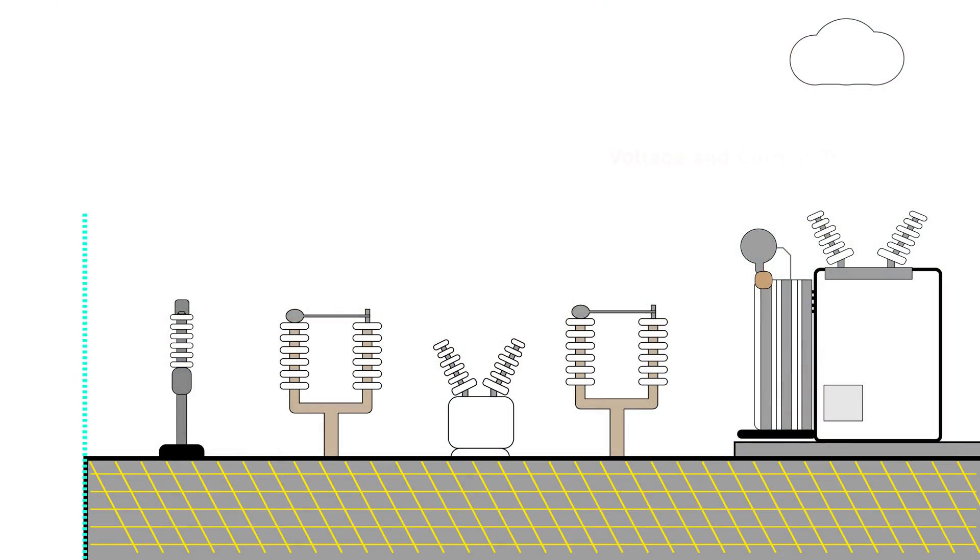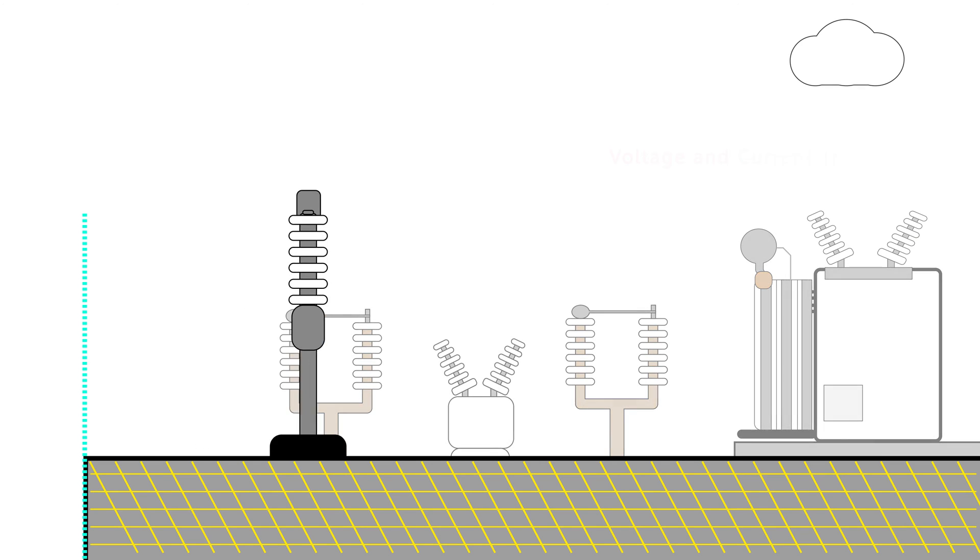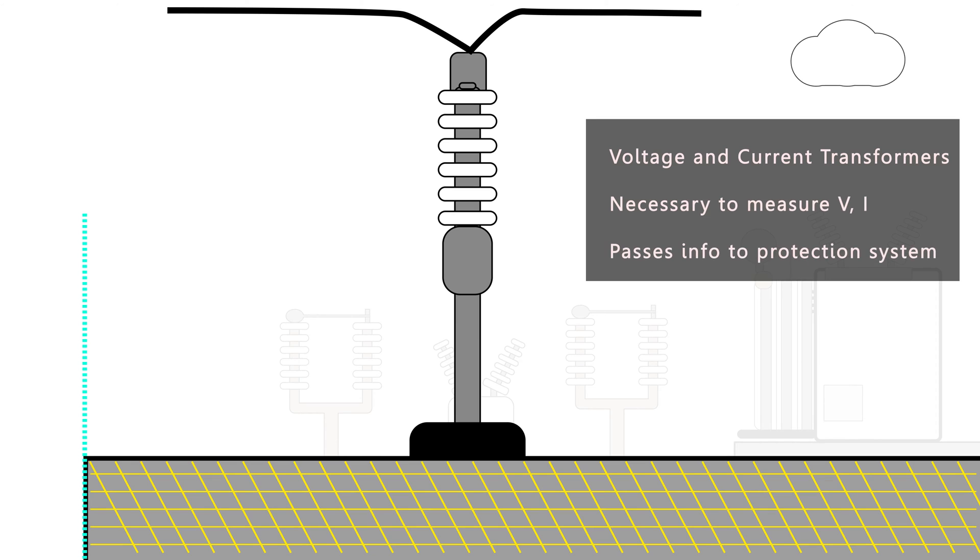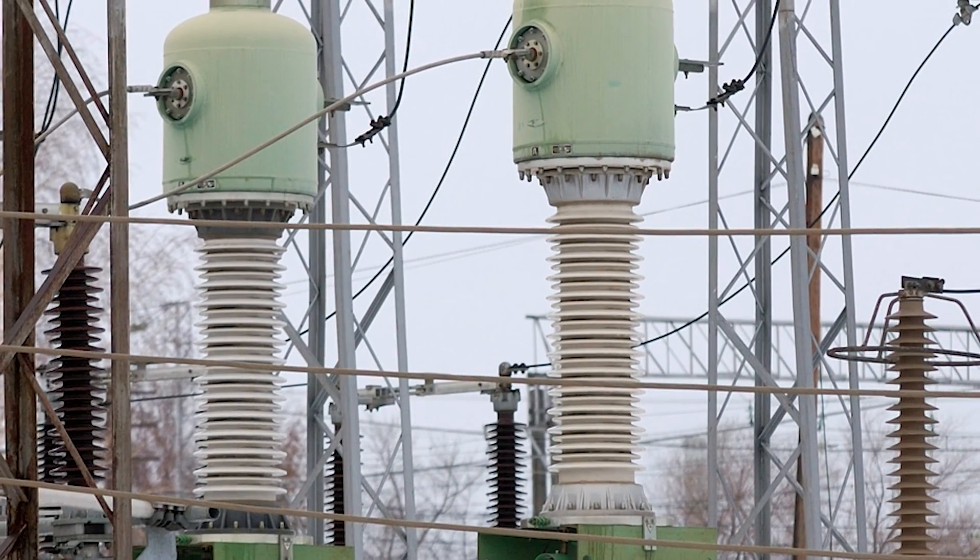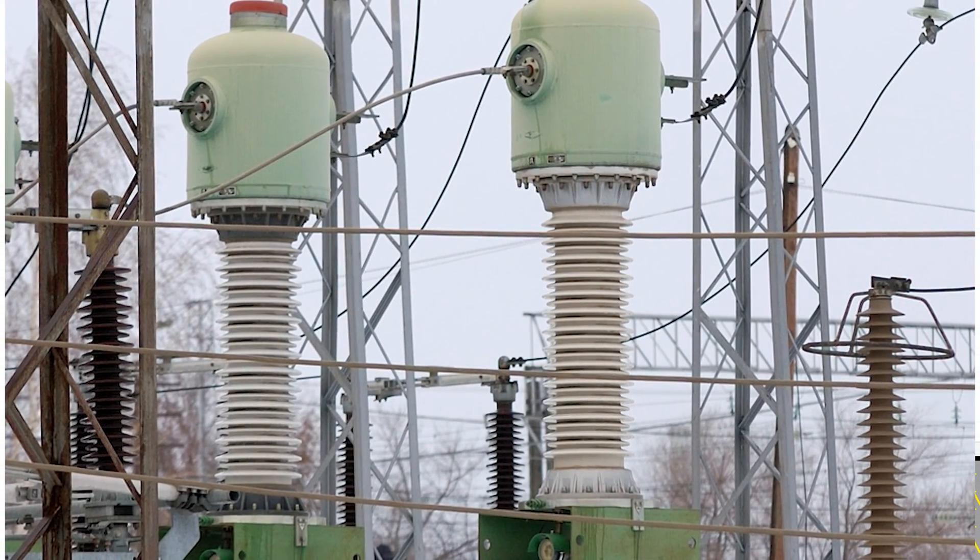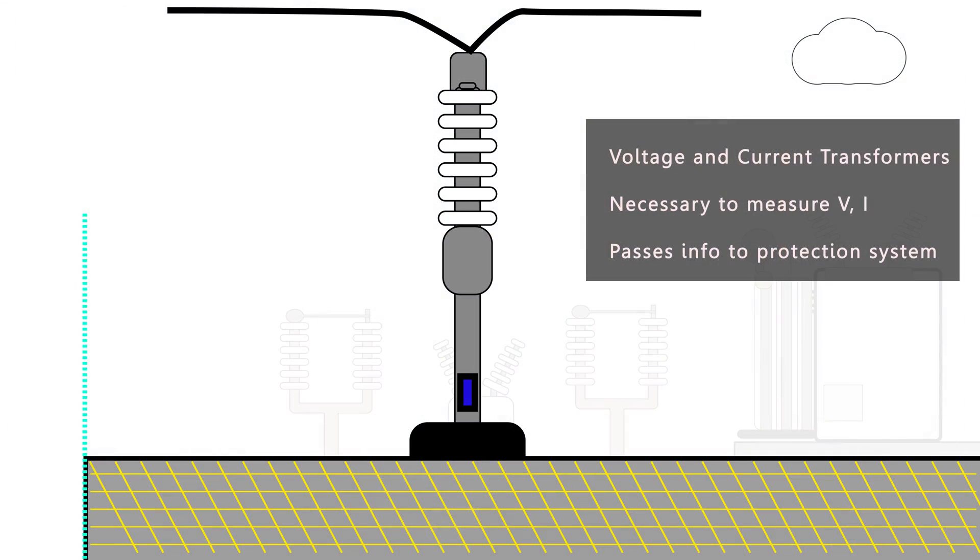Now the first asset we'll look at is the voltage transformer or current transformer. Normally a substation has both. VTs and CTs have the job of measuring voltage and current in the substation. It then passes this information either directly to a relay to make the decision on whether a fault condition is present, or it goes into the communication infrastructure of the substation and then is passed on to the control room.